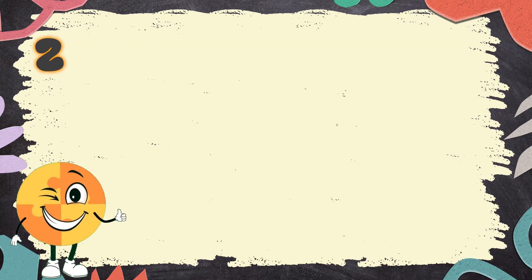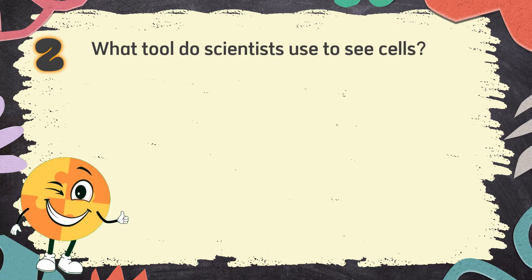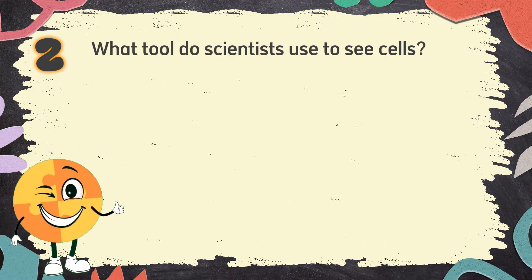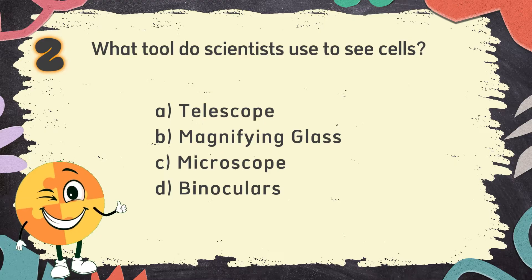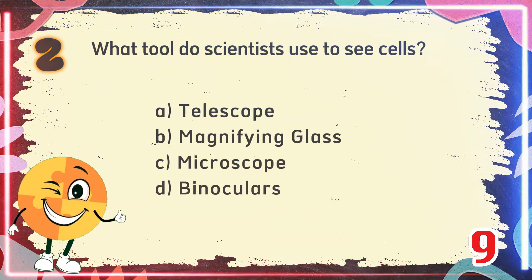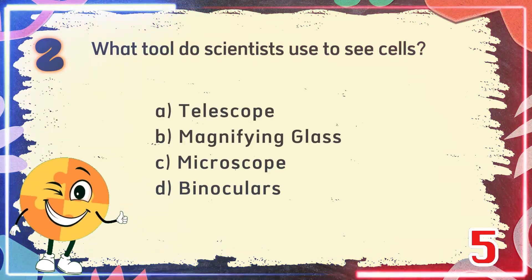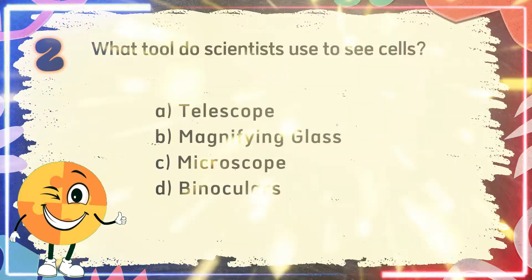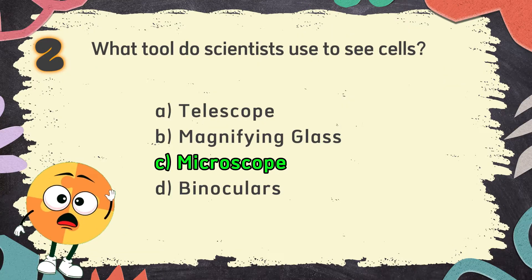Number 2: What tool do scientists use to see cells? The choices are: A. Telescope, B. Magnifying glass, C. Microscope, D. Binoculars. The correct answer is C. Microscope.